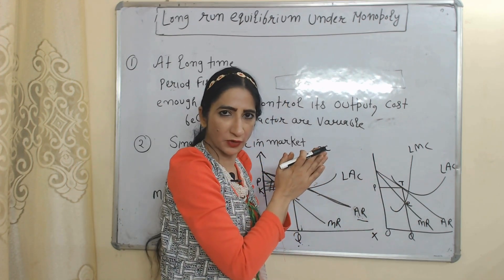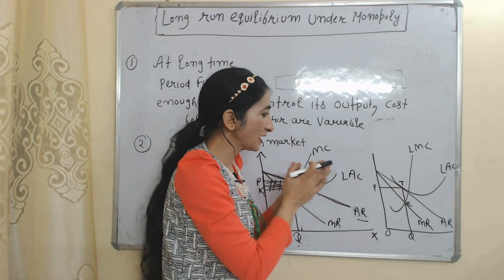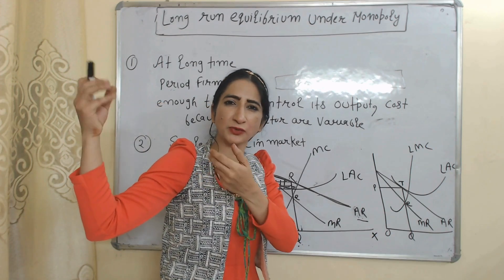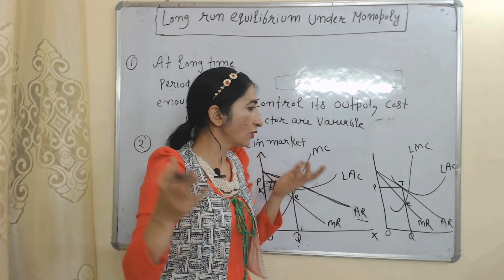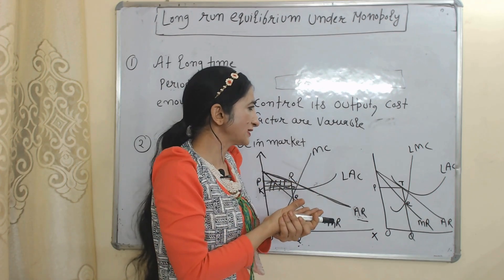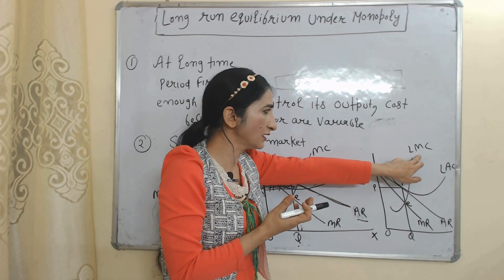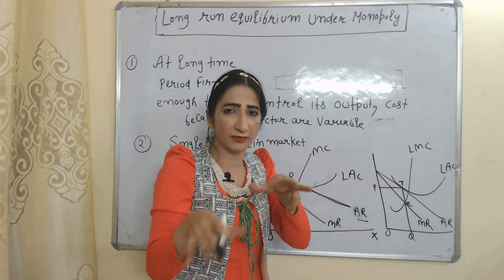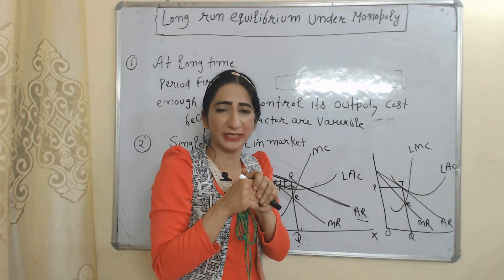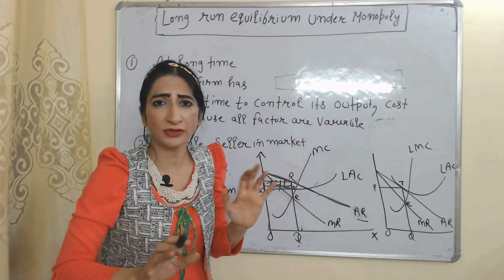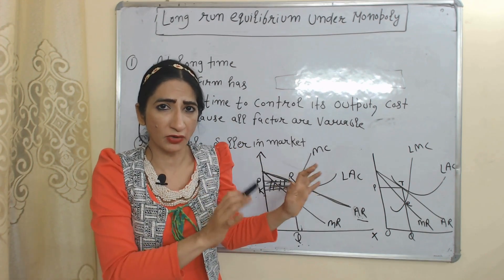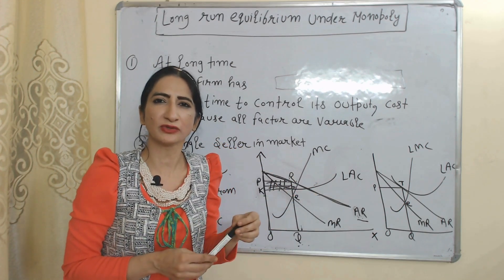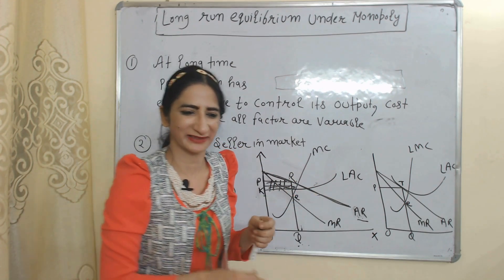In very few cases, monopoly will receive normal profit in the long run. The diagram and conditions of normal profit are the same as discussed for the short-run period. The only difference is that here we write long-run marginal cost and long-run average cost. So this is all about short-run and long-run equilibrium under monopoly market. Thank you so much for watching this video. Bye, take care.